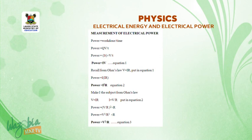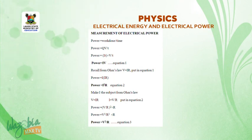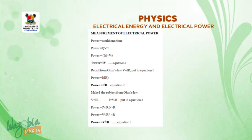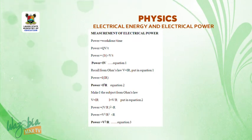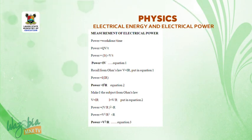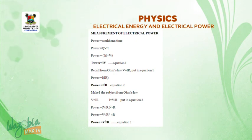Measurement of electrical power: power equals work done over time. Since work done (electrical energy) is QV, power P = QV/t. Since Q = It, power P = IV. That is equation one.